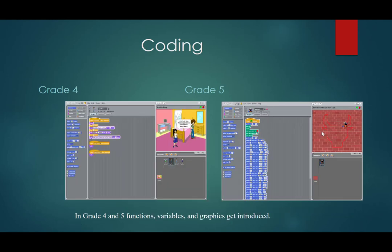Moving on to grade four and five. So in grade four and five, the coding gets, we load the skill set that we ask our students to understand. And so we start to introduce things like functions, variables and graphics. So as you can see in the grade four picture here,